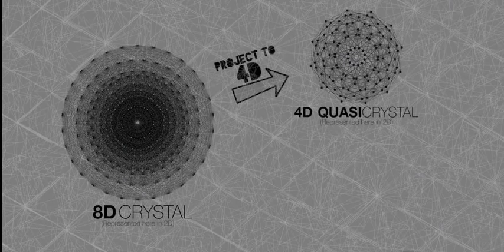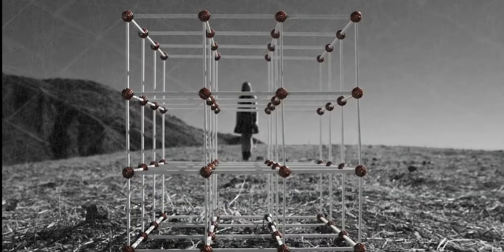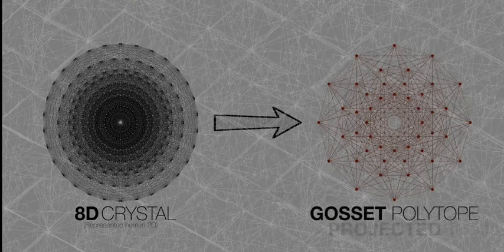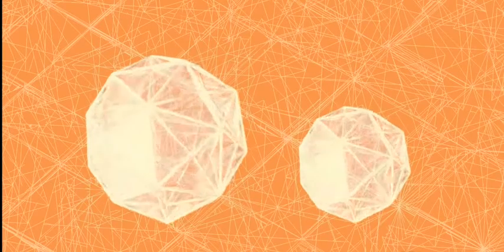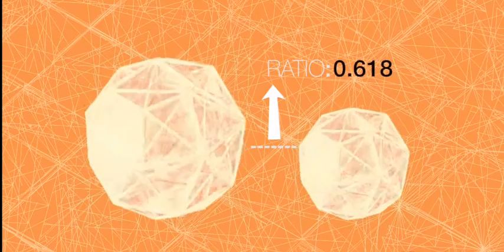To generate that 3D quasi-crystal — the substructure at the pixelated fabric of reality — we project this 8D crystal to 4D, and then convert that to 3D. Just like the basic cell shape of the 3D cubic lattice is the cube, the cell shape of the E8 lattice is an 8D shape with 240 vertices called the Gossett polytope. When the Gossett polytope is projected to 4D, it becomes two identical shapes of different sizes. The ratio of their sizes is a unique number: 0.618, also known as the golden ratio.